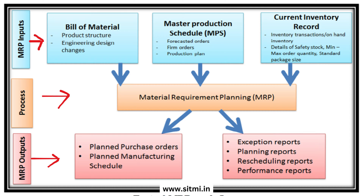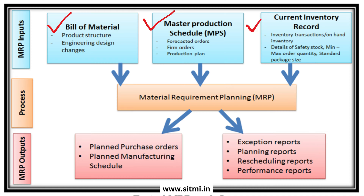So what are the different inputs that MRP takes? The first input is bill of material, also called product structure, and it also considers any changes done by the engineering team — basically called engineering design changes. The second input that MRP takes is master production schedule, which is a production plan that is directly fed into MRP systems. The third input of MRP is current inventory records.